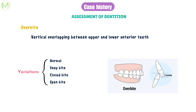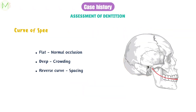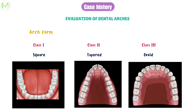Moving on to overbite — it is the vertical overlap between upper and lower anterior teeth. The normal value of overbite is 2 to 3 mm, and it can vary between deep bite, close bite, and open bite. Next, we need to check for the curve of Spee, which is defined as the anatomic curvature of the occlusal alignment of the teeth beginning at the tip of the lower canine, following the buccal cusps of the natural premolars and molars, continuing to the anterior border of the ramus. A flat curve of Spee is normal, a deep curve of Spee is seen in crowding, and a reverse curve of Spee results in spacing. Next, we check for arch form: in Class 1 the arch form is square, in Class 2 it is tapered, and in Class 3 it is ovoid. That brings us to the end of the video — I hope you found it helpful. Do like this video and subscribe to Mediner for more. Thanks for watching.